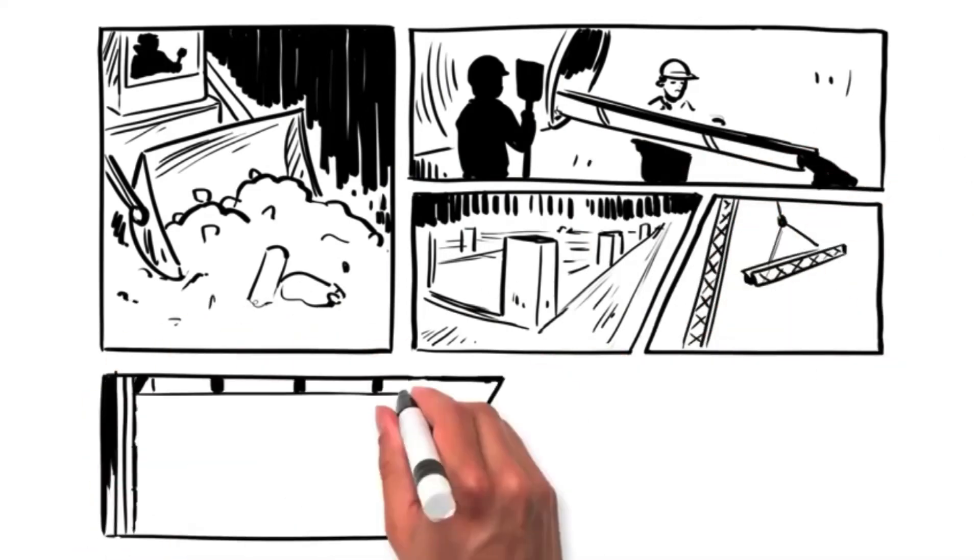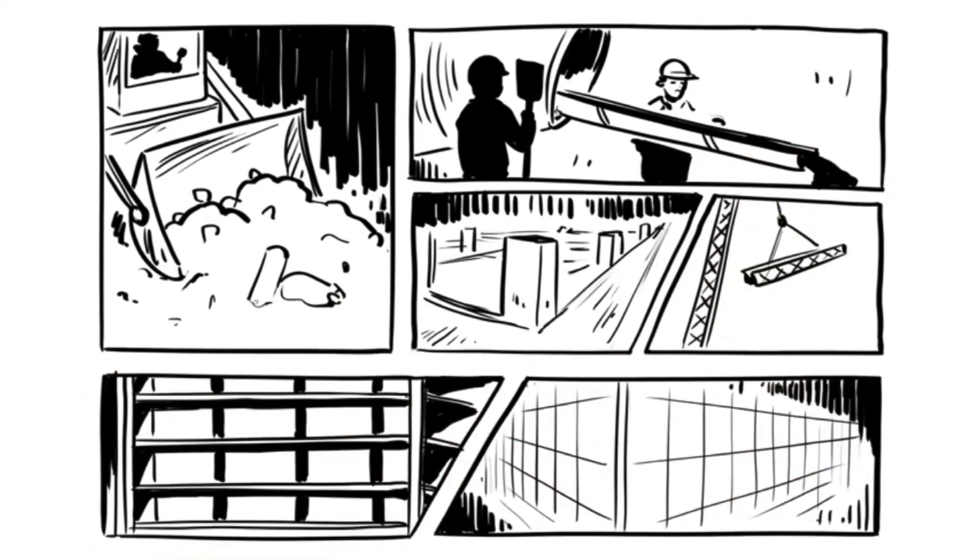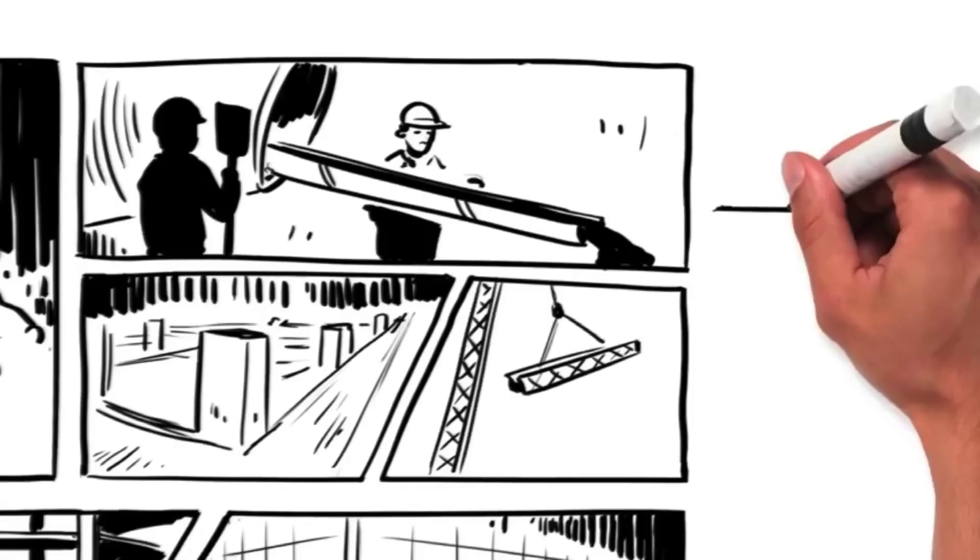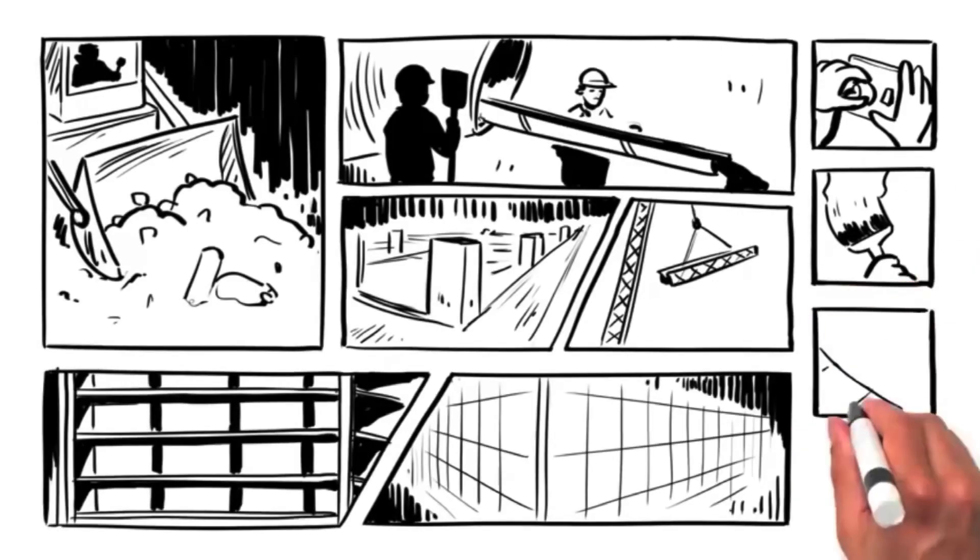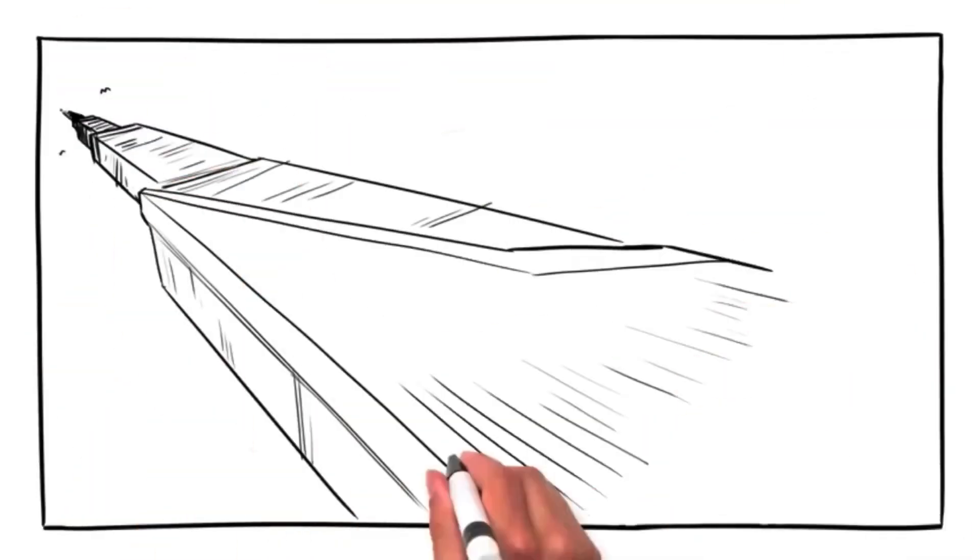Up go the columns, in go the slabs, on goes the cladding, and that's pretty much it. We just need to connect the utilities, paint a few walls, tile some floors, and voila. One skyscraper delivered right on schedule.